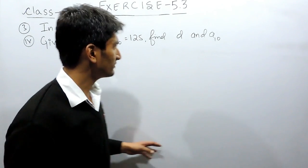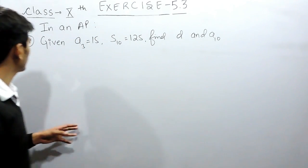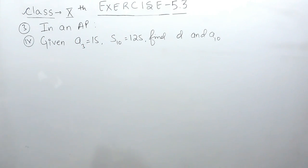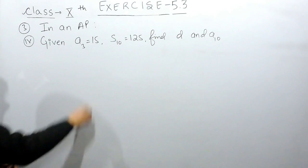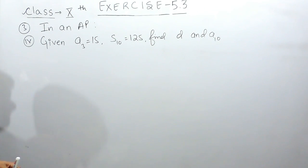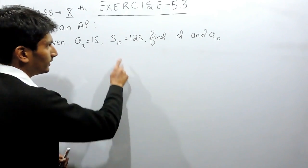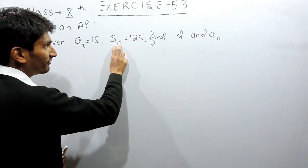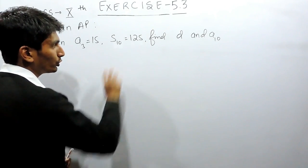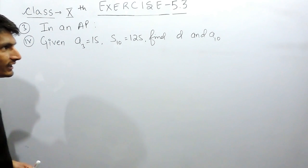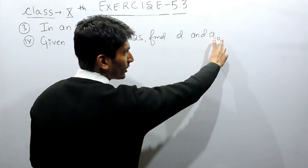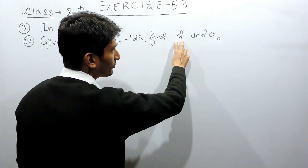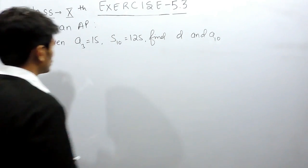Hello everyone. In this video we are going to solve part 4 of question number 3rd. The 3rd term of an AP is given to you, and the sum of the first 10 terms is given as 125. We have to find the 10th term, a10, and the common difference d.